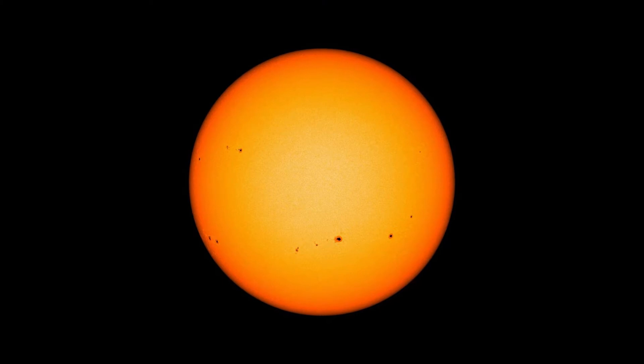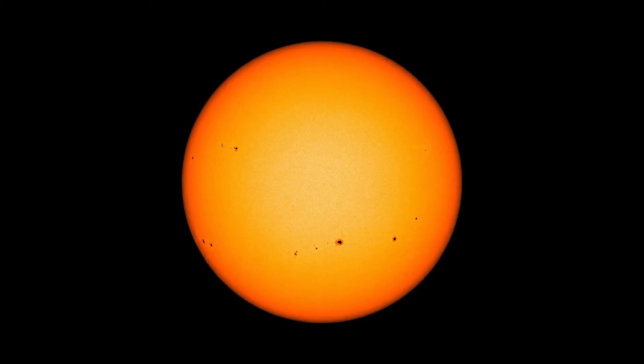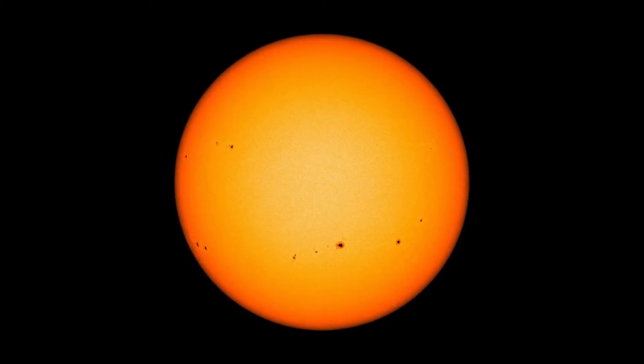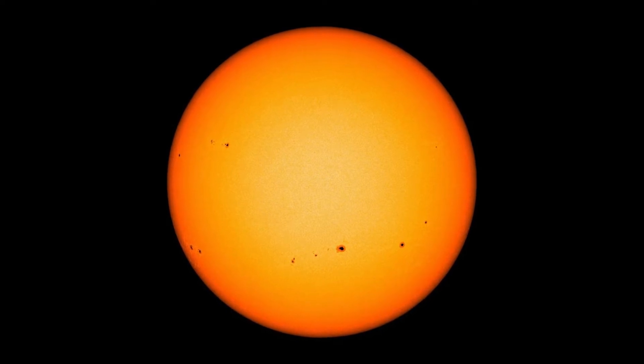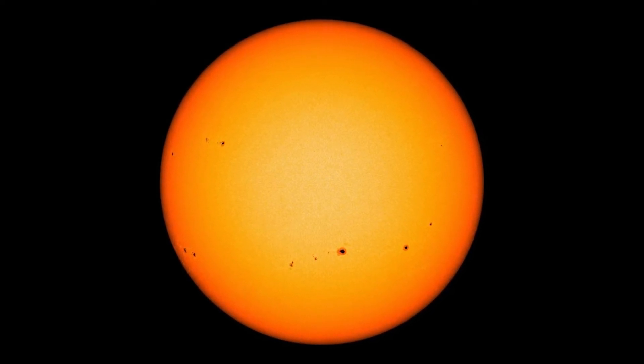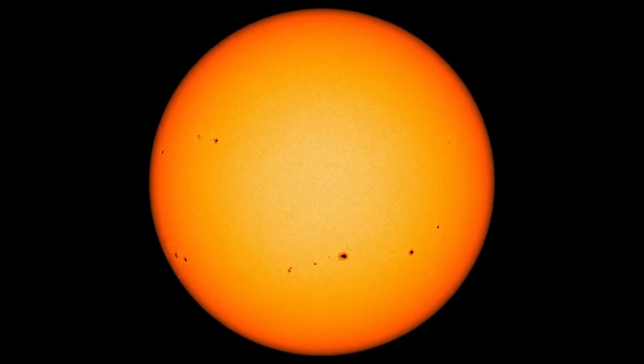11. The Sun is almost a perfect sphere. Considering the sheer size of the Sun, there is only a 10 kilometer difference in its polar and equatorial diameters. This makes it the closest thing to a perfect sphere observed in nature.